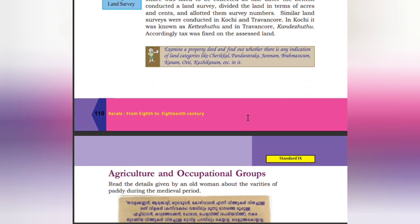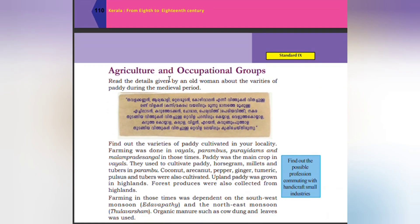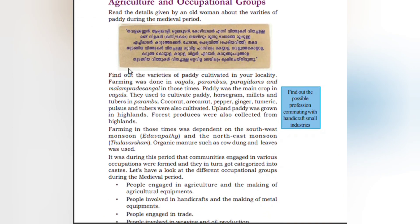According to the survey, tax was fixed on the assessed land. Agriculture and occupational groups were also documented. Farming was done in vials, parambus, purays, dumps, and highland areas. Paddy was the main crop in vials; they also cultivated horse gram, millets, and tubers. In parambu, coconut, arecanut, pepper, ginger, turmeric, pulses, and tubers were cultivated. Upland paddy was grown in high fields, and forest produce was collected from highlands.